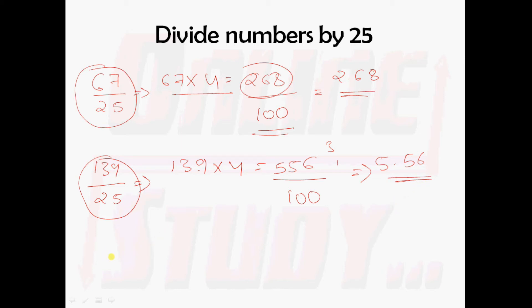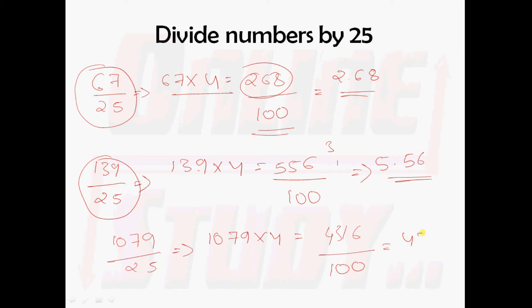We shall take one more example: 1079 divided by 25. This 1079 should be multiplied with 4. You will get 4316, divided by 100 gives 43.16. So 1079 divided by 25 is 43.16.